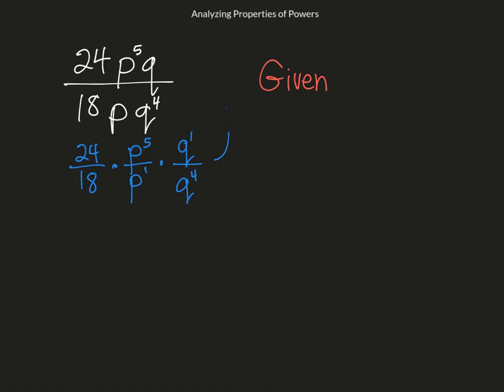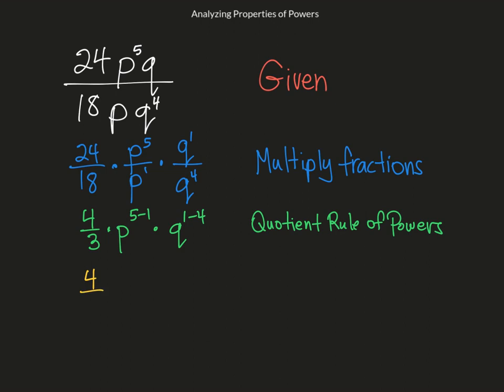Now I'm going to simplify 24/18. Those aren't powers, so I'm not going to subtract the exponents. That is four thirds times p to the 5 minus 1, times q to the 1 minus 4. And that is the quotient rule of powers. So when I subtract those exponents, I get four thirds p to the fourth q to the negative three.